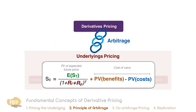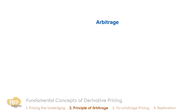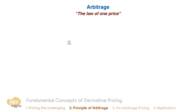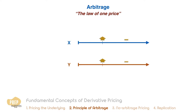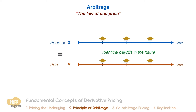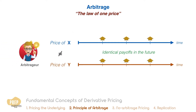We've briefly introduced the concept of arbitrage in the previous lesson. We know that, based on the law of one price, two different securities with identical payoffs in the future should have the same price. Otherwise, an arbitrage opportunity exists.